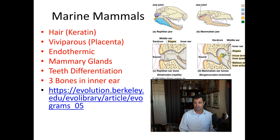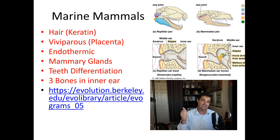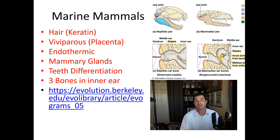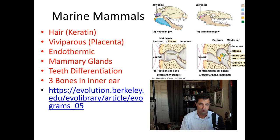First of all, mammals all have hair, and the hair is made out of a protein called keratin — very similar to what we saw in birds, and the same material that makes up your fingernails and hair. You are in fact a mammal. Mammals are viviparous and give birth to live young, feeding and taking care of the young using a placenta. There are a couple exceptions, but not in the marine environment, so we'll stick with the marine viviparous mammals.